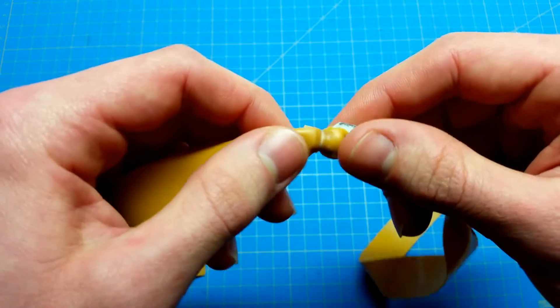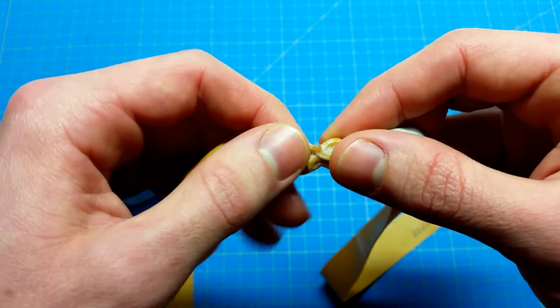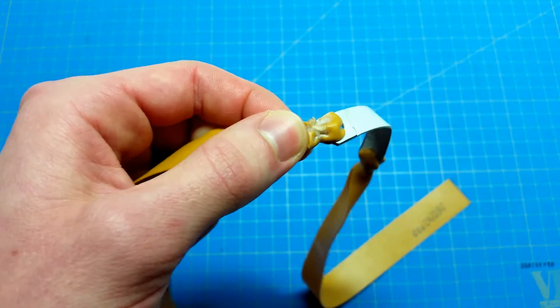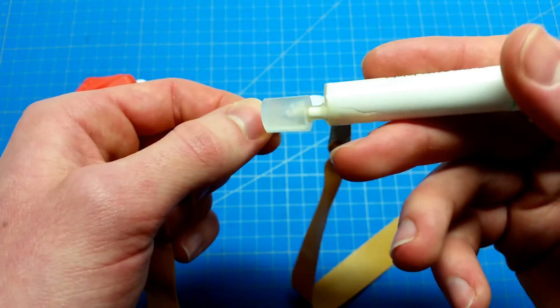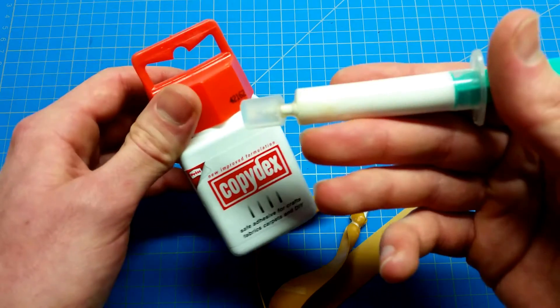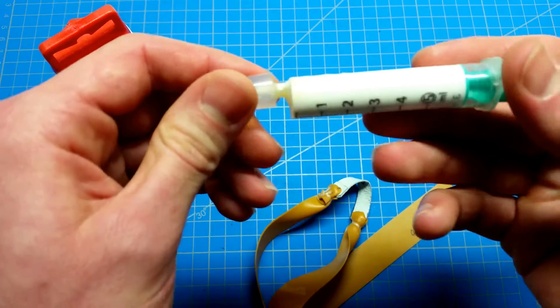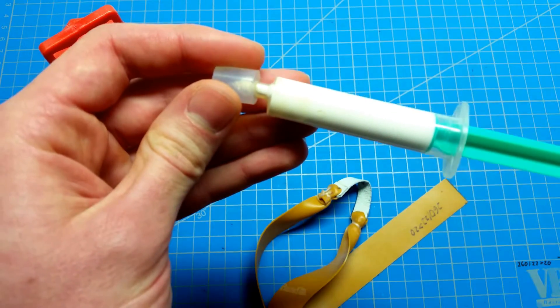I use the constrictor knot with a thin piece of string, and then I apply Copidex out of a syringe. When it dries, it just becomes like rubber.